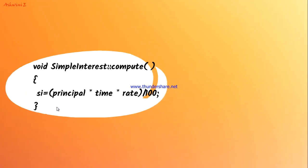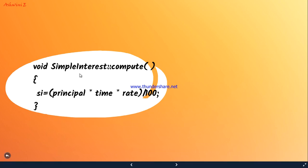Next is the compute function. You write it outside the class: void SimpleInterest::compute. Inside the flower braces you place the formula — si = (principal * time * rate) / 100. Whatever values are given, they will be calculated and stored in SI. This is the end of the compute part.